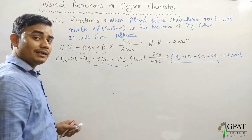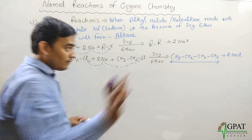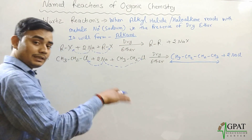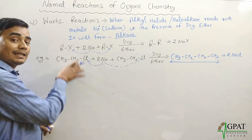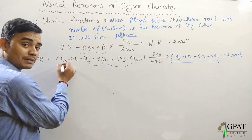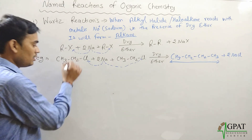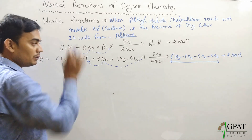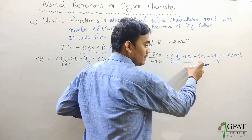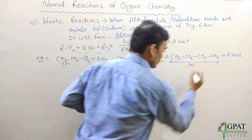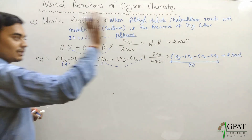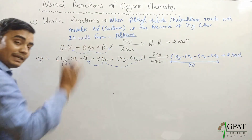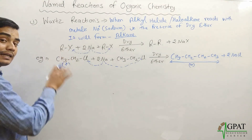One important condition always applies: the carbon number in the formed alkane will be doubled compared to the parent alkyl halide. In our example, the parent ethyl chloride had two carbons, and the formed alkane butane has four carbons — always doubled.